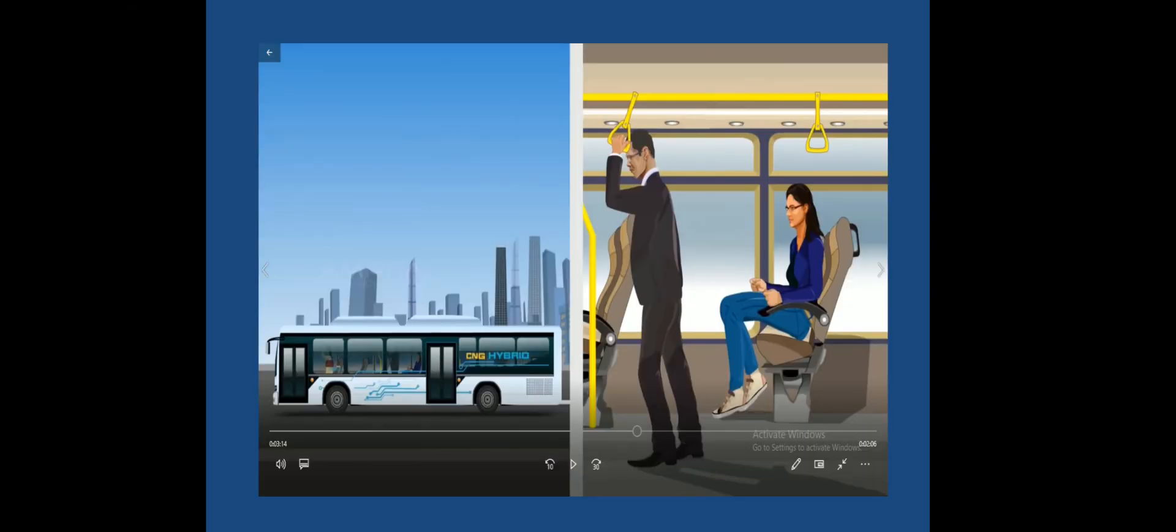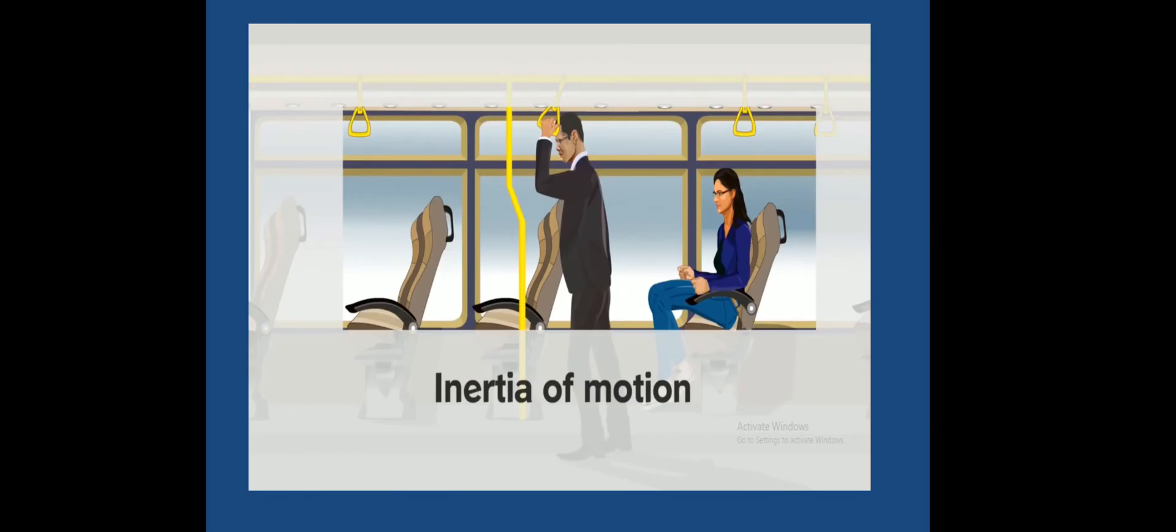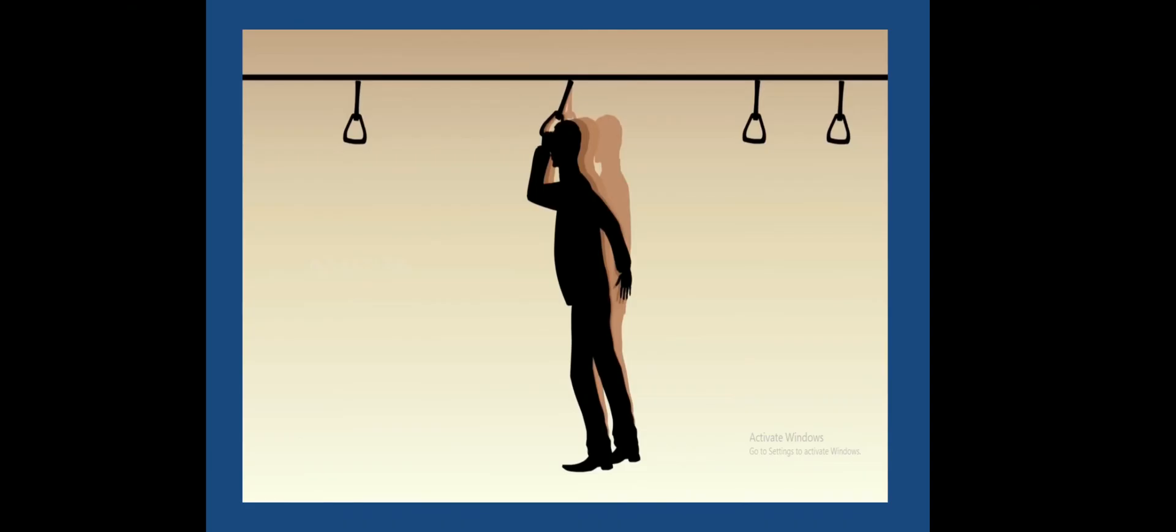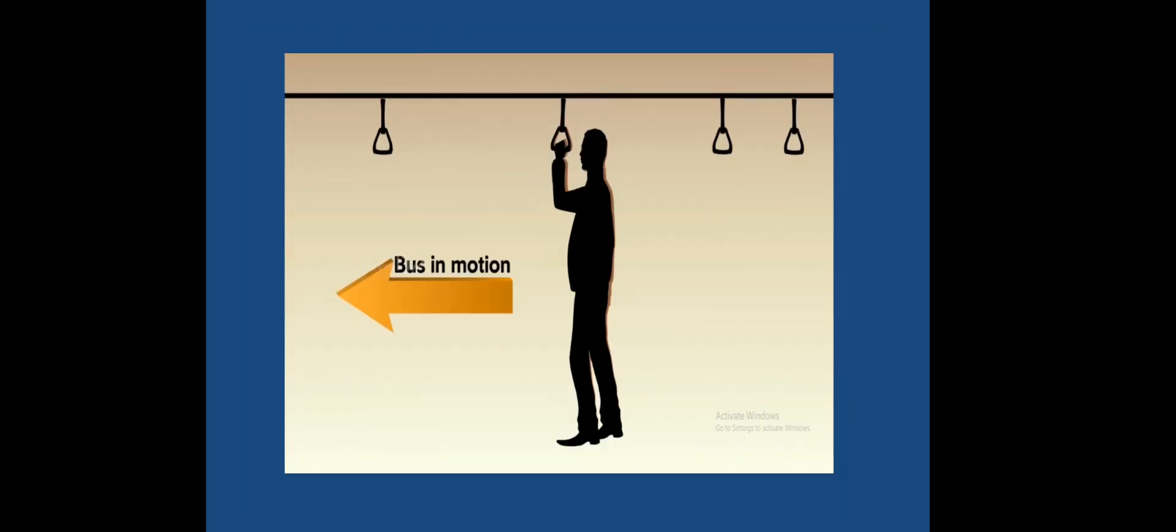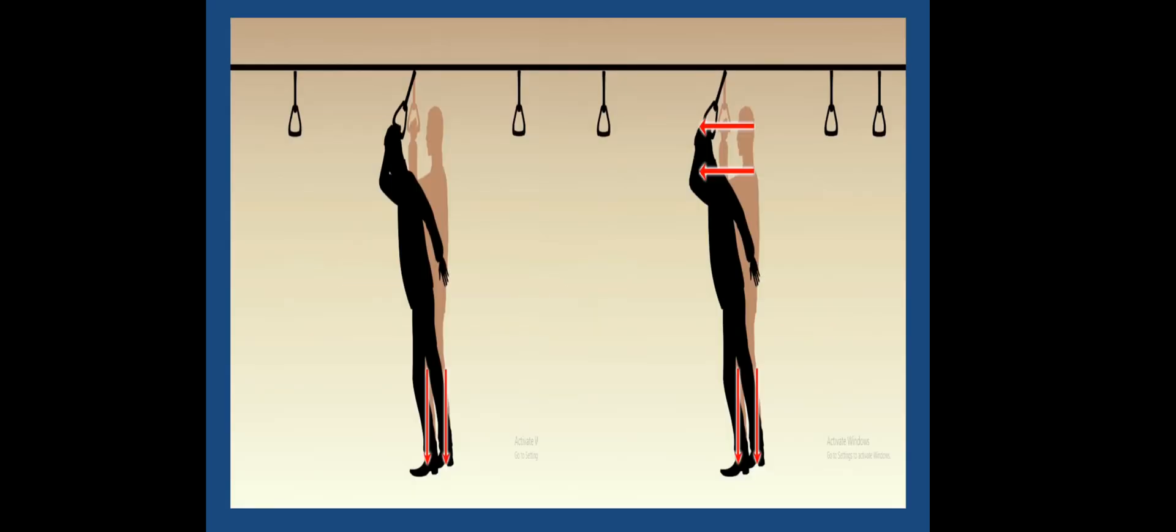With the application of sharp brakes, the bus stops all of a sudden and the passenger tends to fall forward. This is due to inertia of motion experienced by the upper part of the body. When the bus is moving, the whole body of a passenger is in a state of motion. A sudden halt causes the lower part of the passenger's body that is in contact with the bus to come to rest. However, the upper portion of his body remains in a state of motion due to the inertia of motion, causing the passenger to fall forward when the bus stops suddenly.